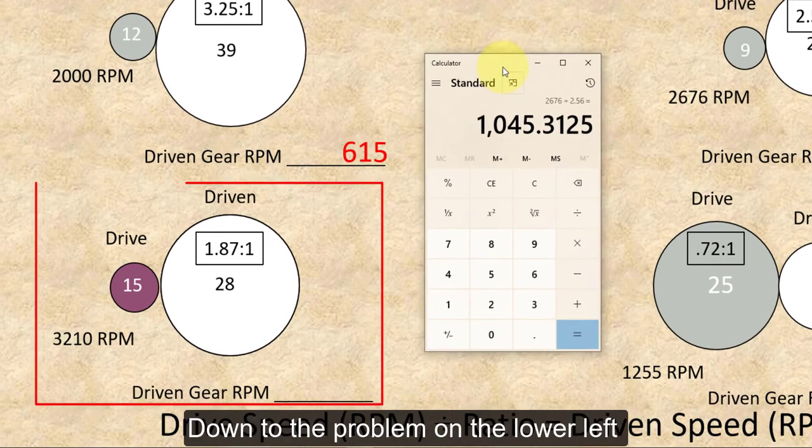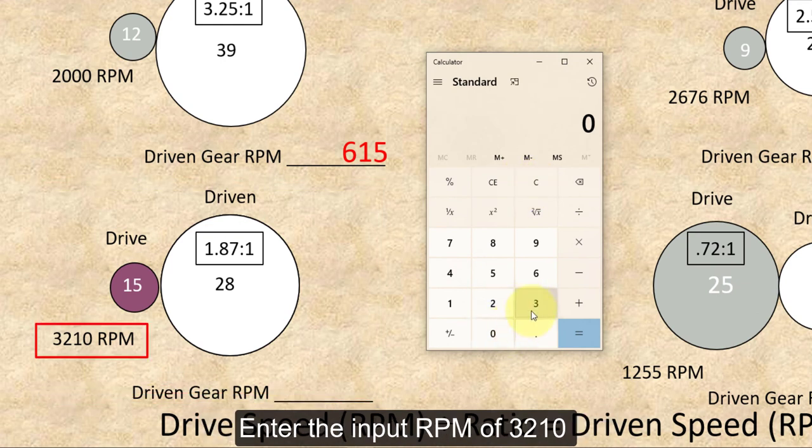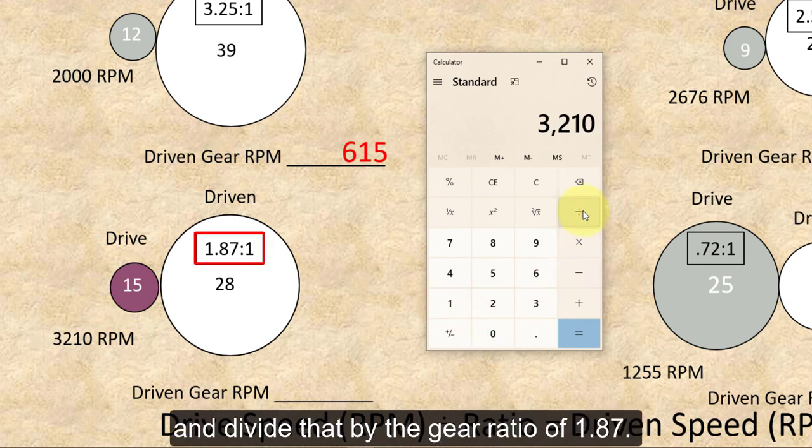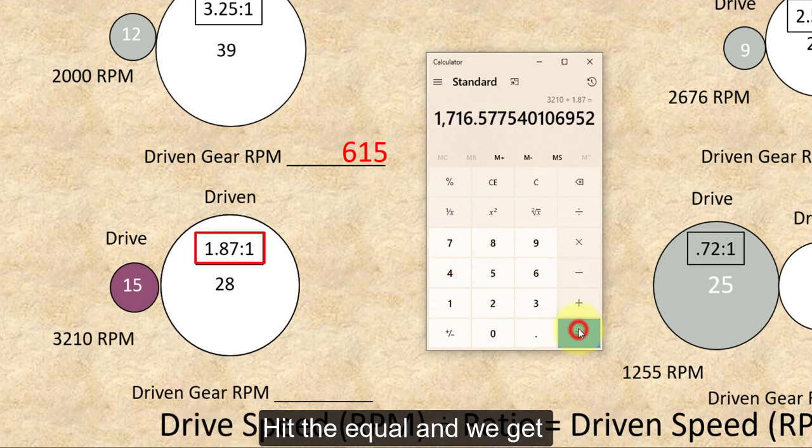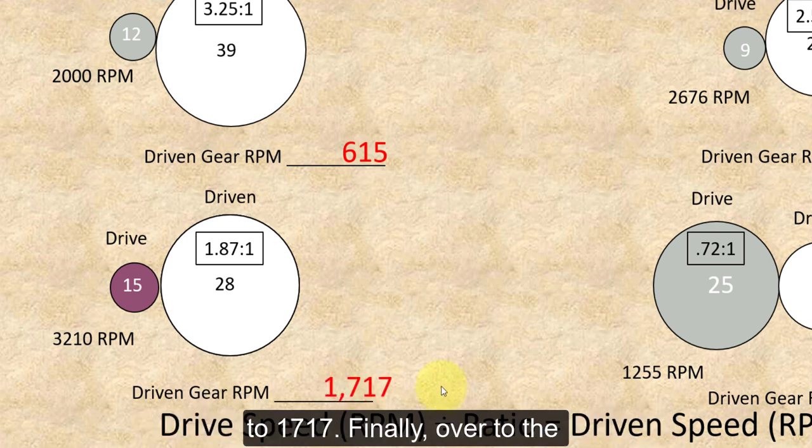Down to the problem on the lower left, clear the calculator one more time. Enter the input RPM of 3,210, and divide that by the gear ratio of 1.87. And hit the equal, and we get 1,716.577, and that is also going to be rounded to 1,717.